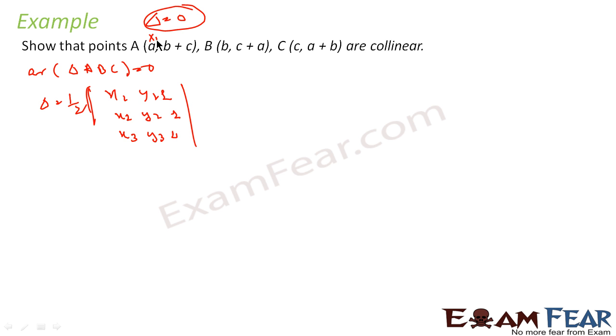This is x1, this is y1, this is x2, y2, x3 and y3. So let's put the values. This is nothing but x1 is a, y1 is b plus c and then 1; x2 is b, y2 is c plus a and 1; x3 is c and this is a plus b, which is y3, and then 1. So this is my area of triangle.